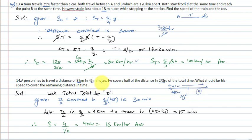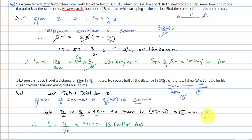Total distance is 8 km. Half the distance is covered in two-thirds of total time: two-thirds of 45 minutes = 30 minutes. So 4 km is remaining and must be covered in 15 minutes. Speed equals distance upon time = 4 km divided by 15/60 hours = 4 divided by 1/4 = 4 × 4 = 16 km per hour. This is the answer.